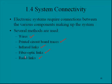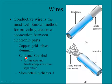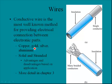The first one we'll look at is wires. Conductive wire is the most well-known method for providing electrical connection between electronic parts. Conductive wire is usually made of either copper, gold, silver, or aluminum — all highly conductive substances.